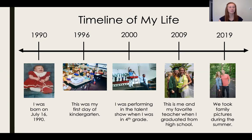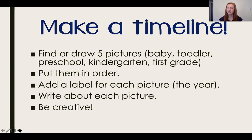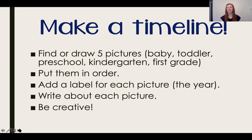Now it's your turn. You are going to be making a timeline this week. You can have your parents help you find five pictures, or you can draw five pictures. You need one picture from when you were a baby, one from when you were a toddler like two or three years old, one from when you were in preschool, one from kindergarten, and the last picture is from the present when you are in first grade. Then you need to put them in order, add a label for each picture — remember, those are the years — and write a sentence about each picture.